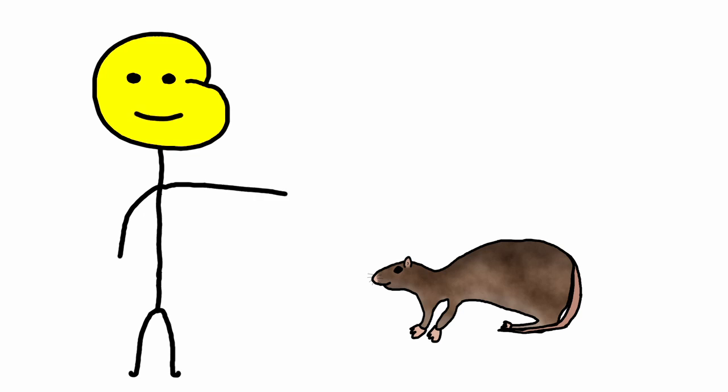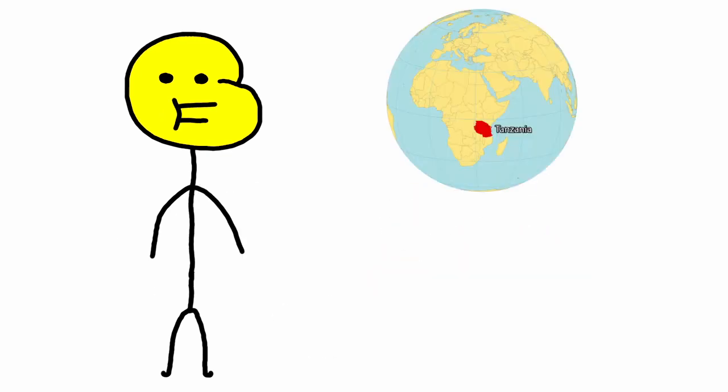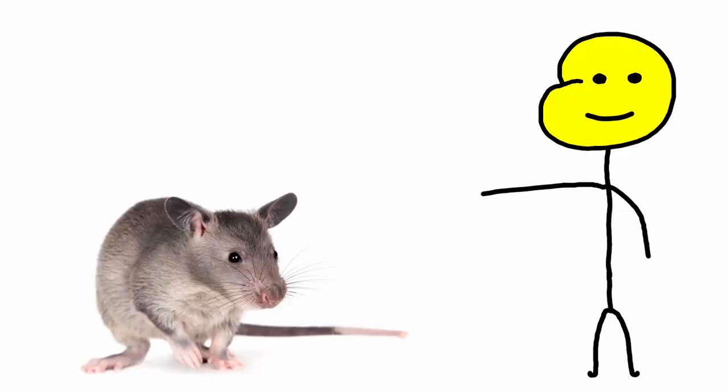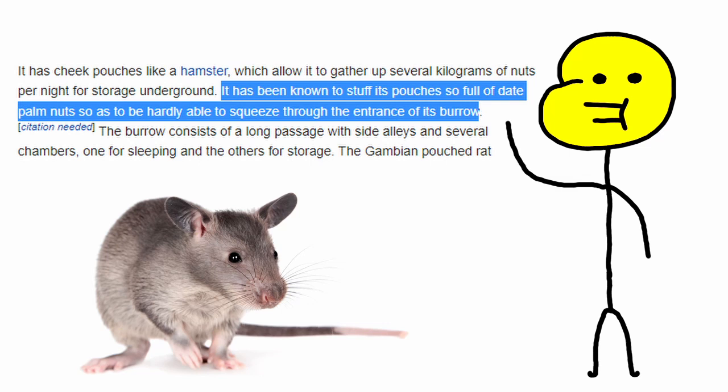Rats can also be trained like dogs. They can be trained to roll over, twerk, and even sniff out landmines. Seriously, in Tanzania, they use Gambian pouched rats to sniff landmines and tuberculosis. They literally took these cheese munchers which once stuffed their mouth with so much food that they could barely fit inside their own burrows and taught them to be contributing members of society.